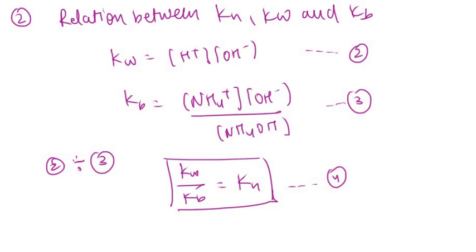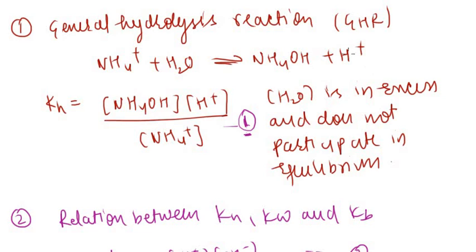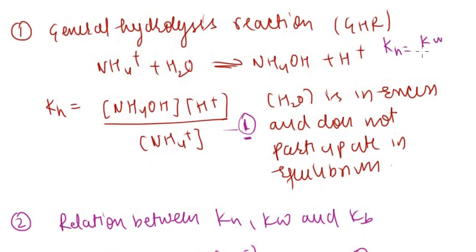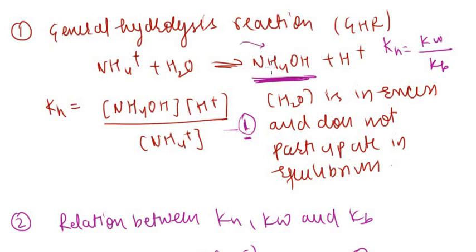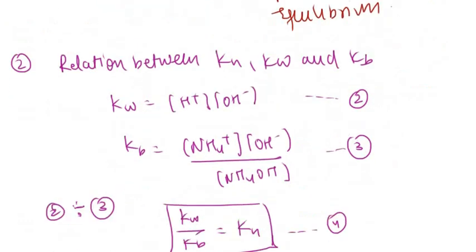A useful trick: KH always equals KW divided by the equilibrium constant of whatever species appears on the right-hand side of the hydrolysis reaction. Here we have a base (NH4OH) on the right-hand side, so its equilibrium constant is KB, giving KH = KW / KB. This trick helps in more complicated cases without going through the full derivation each time.